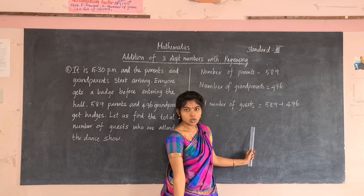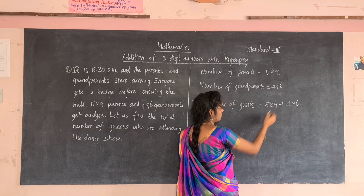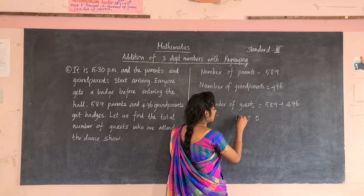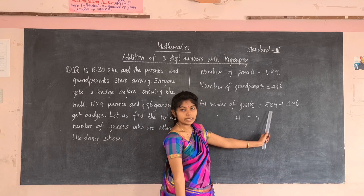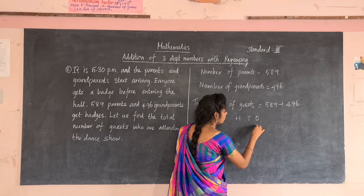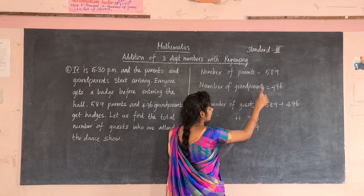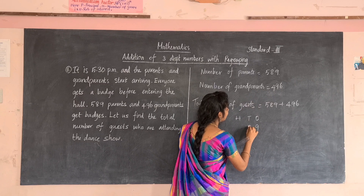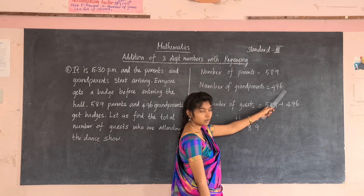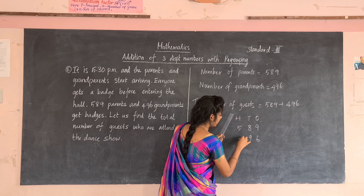To add these two numbers, we give place values one by one. How many digits are here? Three digits — one, two, three — so this is a three-digit number. Write the place values up to hundreds: ones, tens, and hundreds. Write nine in the ones place, eight in the tens place, five in the hundreds place for the parents' number. Then for the grandparents' number: six in the ones place, nine in the tens place, four in the hundreds place.